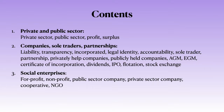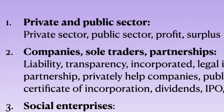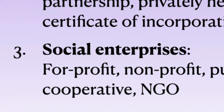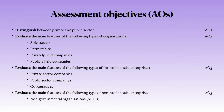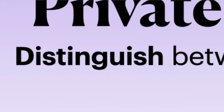So in this class there are three parts: Private and Public Sector, Companies, Sole Traders and Partnerships, and Social Enterprises. And even though I broke down this class into three parts, there are four assessment objectives. The first part of this class is Private and Public Sector, and the objective here is to distinguish between Private and Public Sector, which is AO2.